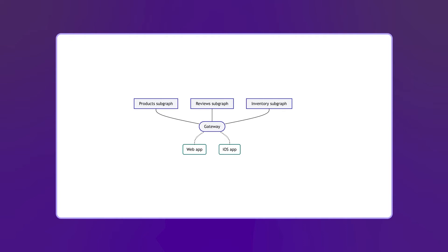So this could be an architecture based on Apollo Federation. For example, you have three microservices — products, reviews, and inventory — and we have two clients, a web application and an iOS application. In the middle there is our gateway, which is basically combining all our APIs into one. I'm not going to go into the details of why you should use federation; I think it's a pretty neat architecture and there's plenty of talks on that. Instead, let's see how federation works.